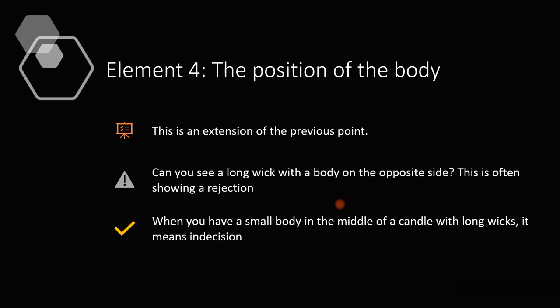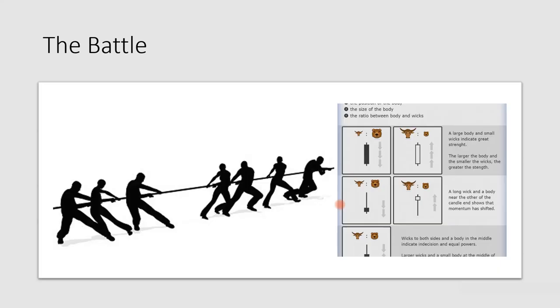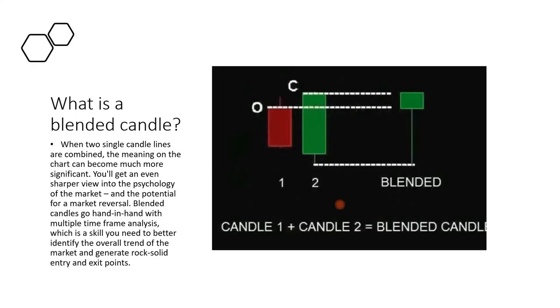A long wick with a body on the opposite side often shows rejection. When you have a small body in the middle of a candle with long wicks, it means indecision. If you just close your eyes and imagine that tug of war, you can understand what is happening and what price is trying to tell you in that single time frame. So now the question comes: what's a blended candle? Blended candles must be adjacent candles — as many as you want.